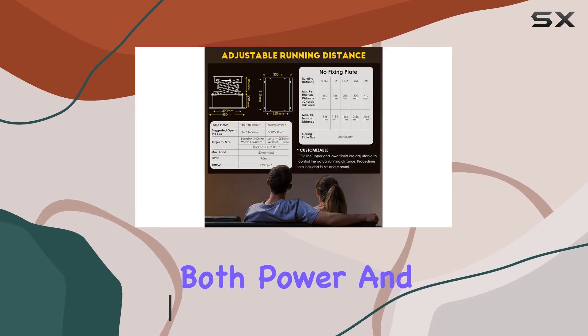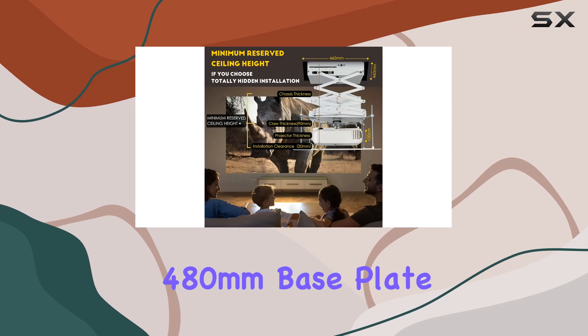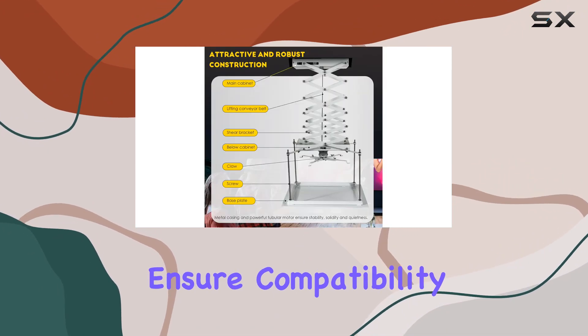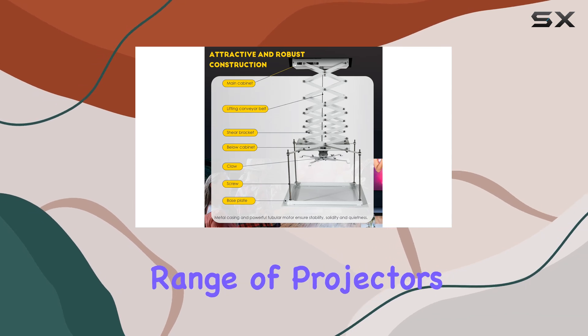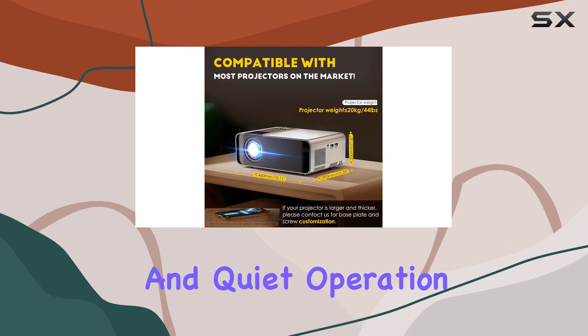this mount offers both power and reliability. The 480mm x 480mm base plate and adjustable running distance ensure compatibility with a wide range of projectors, while the electromagnetic brake system guarantees stable and quiet operation.